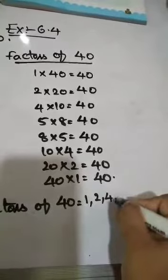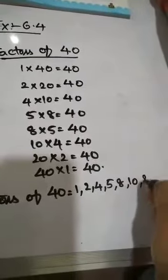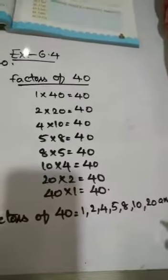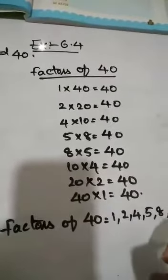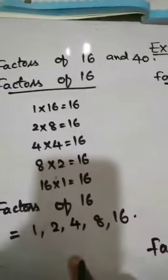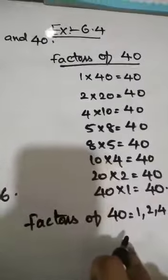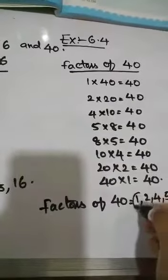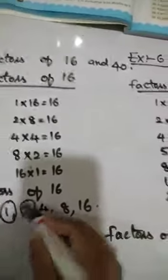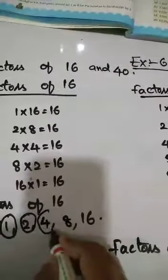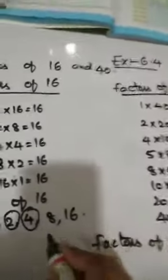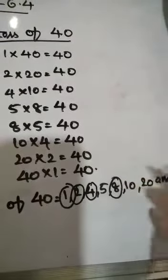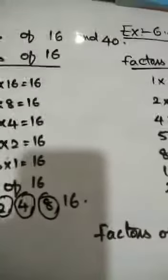So these are the factors of 40. Next, what we have to do is find their common factors. So we have to find common factors of 16 as well as 40. The common numbers in both are 1, 2, 4, and 8. So these are the common factors of 16 and 40.